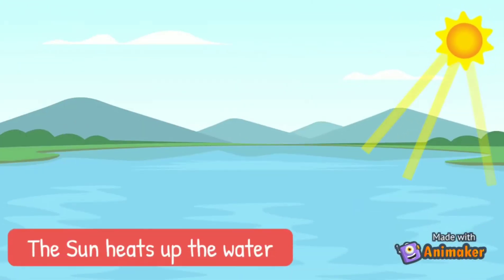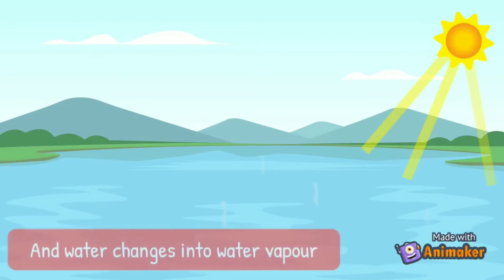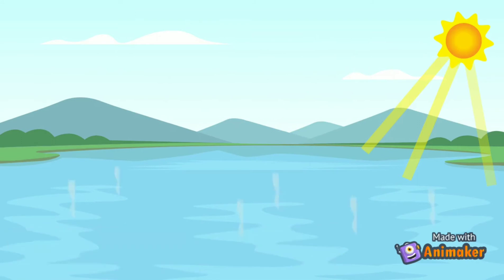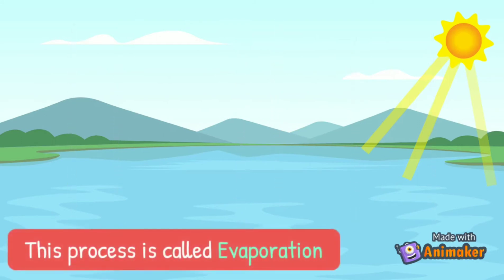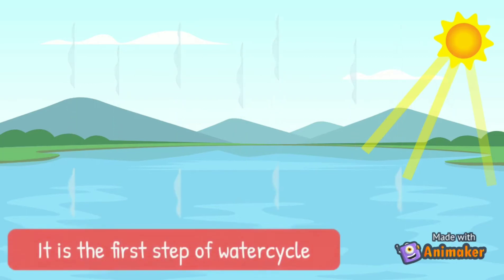The sun heats up the water and water changes into water vapor. This process is called evaporation. It is the first step of water cycle.